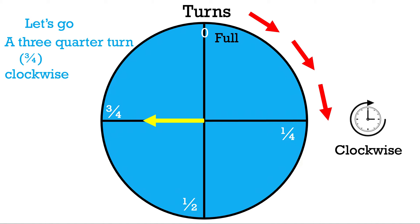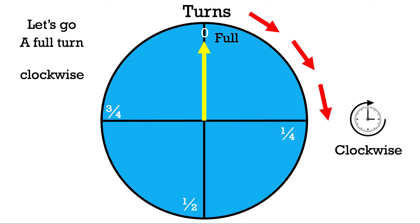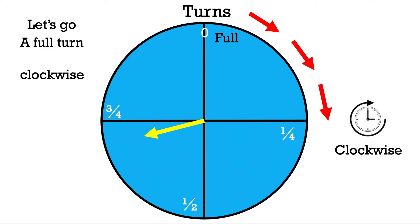Let's move back to the top and do a full turn in the clockwise direction. We need to go to the right — that is four sections. We pass the quarter turn, pass the half turn, pass the three-quarters turn, and finally reach a full turn. We're back to the original position, and we answered the question: a full turn in the clockwise direction.